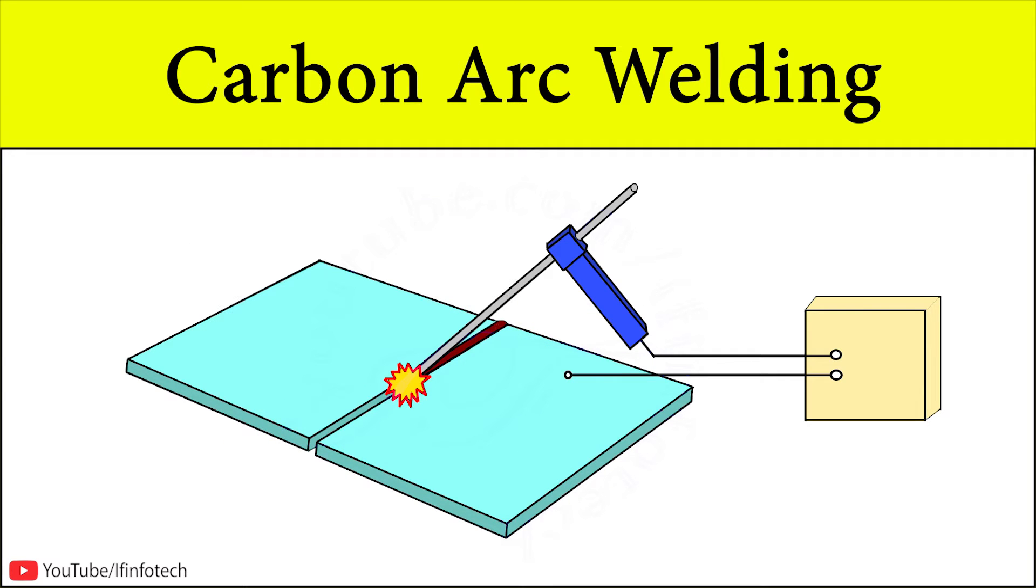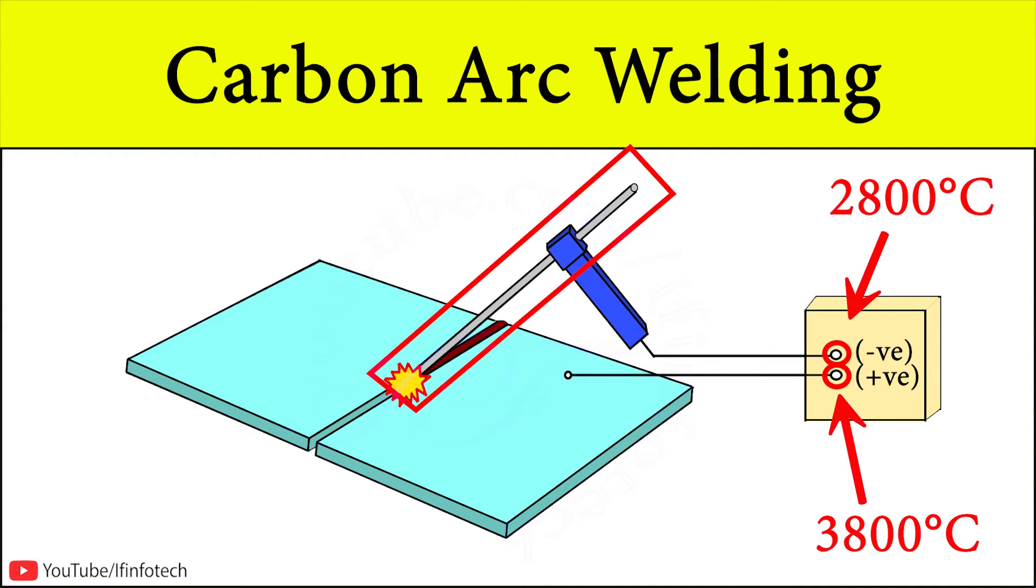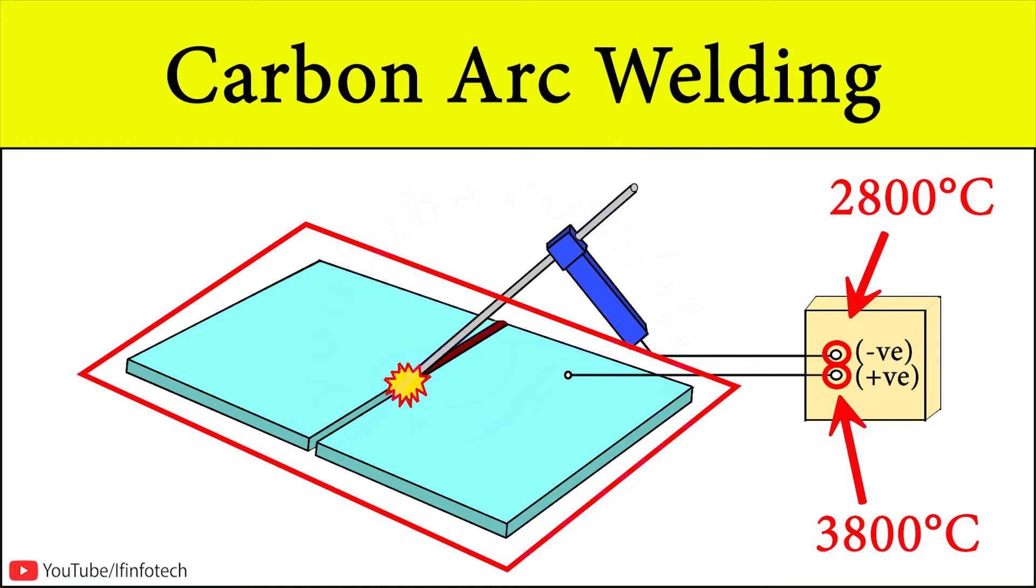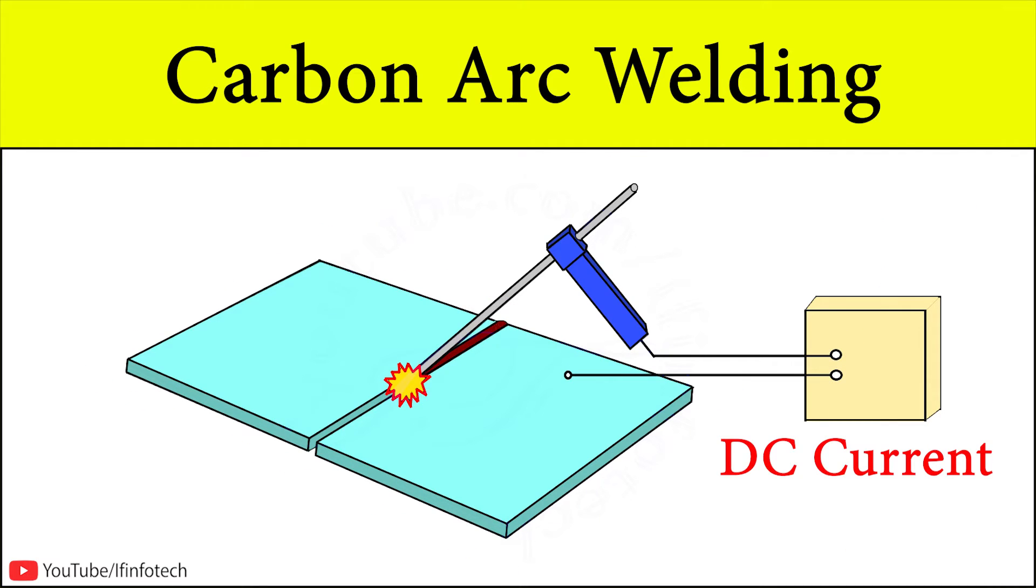In this process the heat temperature at the negative electrode is 2800 degrees centigrade and at the positive electrode the temperature is 3800 degrees centigrade. So the carbon electrode is used as the negative pole because of the low temperature generated on the tip compared to the workpiece. DC current is used in carbon arc welding.